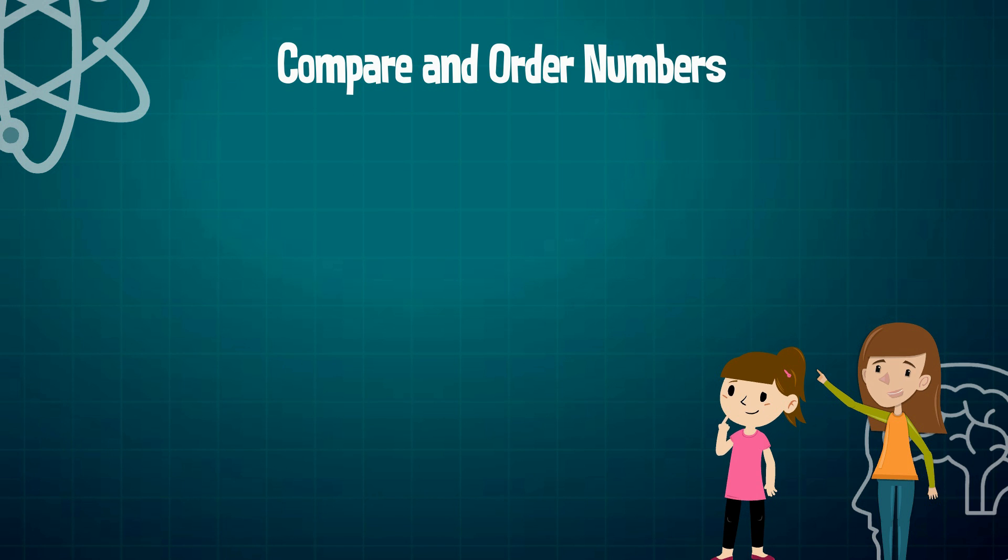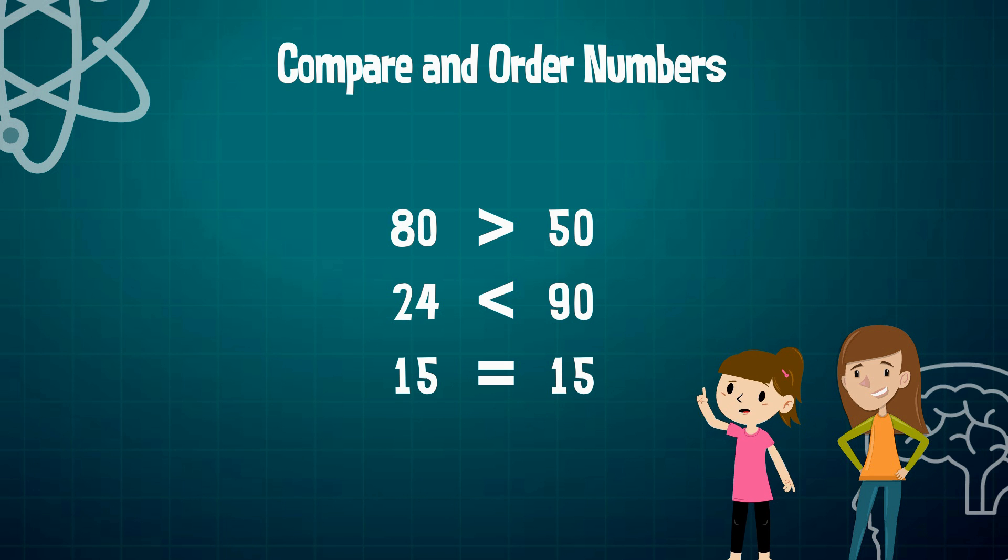There are three symbols we use when comparing numbers: one is greater than, the other one is less than, and the third one is equal to. For example, 80 is greater than 50, or the number 24 is less than 90. Now, if we were to compare 15 with the number 15, both of these numbers are equal to each other. This is easy to understand.